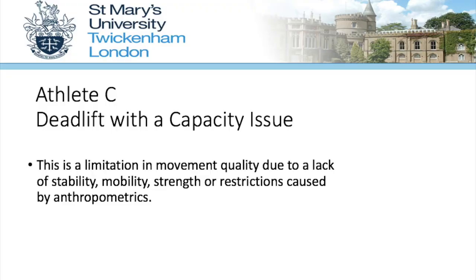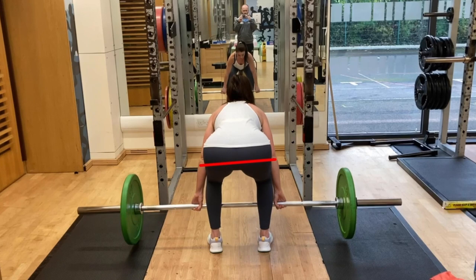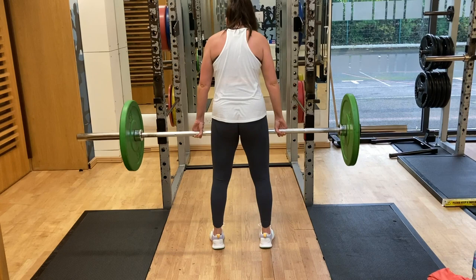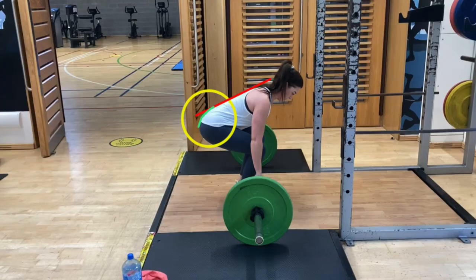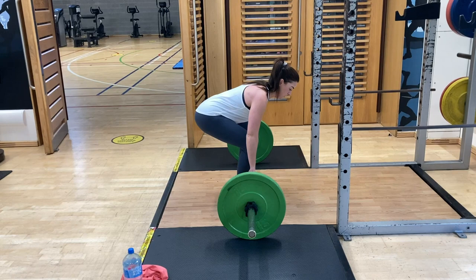Next up we have the deadlift with a capacity issue. Viewing the deadlift from the rear view, we see that in the start position the athlete has an elevated right hip. This could be due to a lack of mobility in the hip or hamstring. After clearing the initial restriction in the start position, the athlete is able to regain a level hip throughout the remaining portion of the lift. Analysing the deadlift from the side view, there is a posterior pelvic tilt causing the lumbar spine to flex, creating a higher shear and compression force throughout the lumbar spinal region.